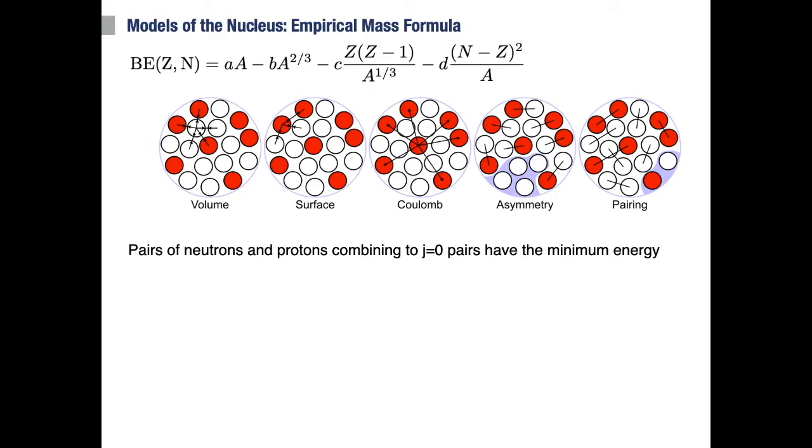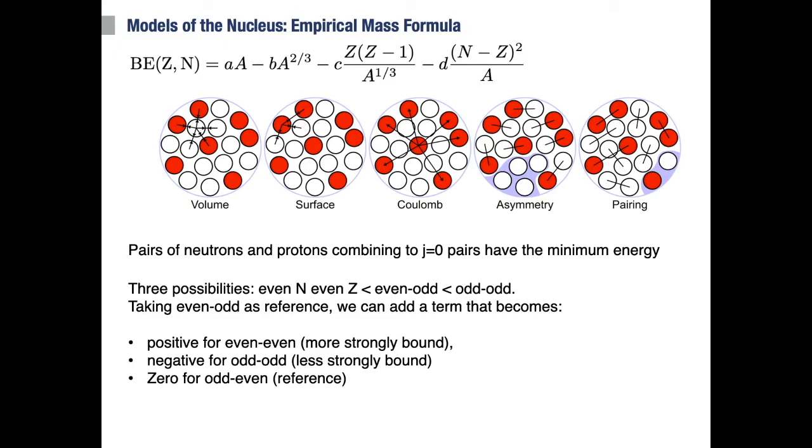Finally, based on what we know from quantum mechanics, we expect pairs of neutrons or protons which couple to give a total spin of zero to have a somewhat lower energy than single protons and neutrons. Nuclei with even N and even Z will have lower energy than odd-even nuclei, which in turn will have lower energy than odd-odd nuclei. So if we take the odd-even as a reference, then we can add a pairing term that is positive for even-even, zero for even-odd, and negative for odd-odd nuclei.